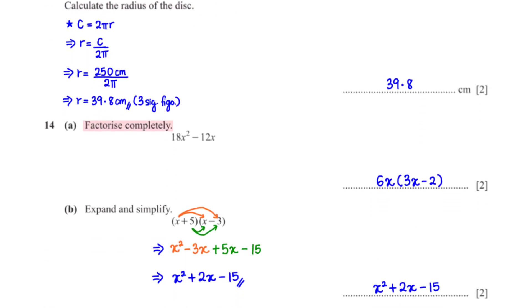Factorize completely: 18x squared minus 12x. The terms have a common factor of 6x. When we factor that out, we are left with 3x minus 2.